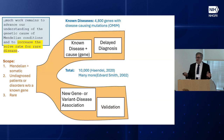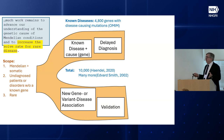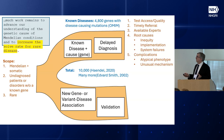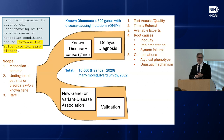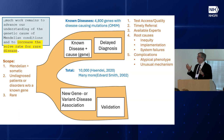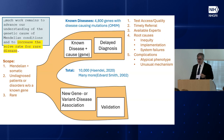If we think about the proportions — one estimate is 10,000 known diseases, so about half and half. For known disease genes, just as you would when talking about public health and shelter and water and food, the biggest problem at a global scale is test access and timely referral. Inequity, implementation, and system failures are really what keep the technology from the patients in most cases. But from a biologist's point of view, there are atypical phenotypes and unusual mechanisms.